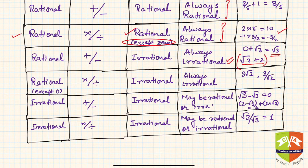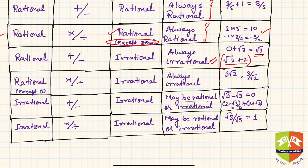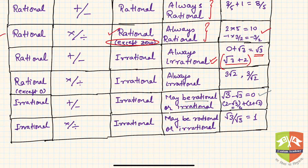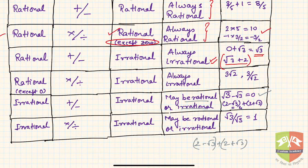Most interestingly, irrational plus or minus irrational is not necessarily rational — it may be rational or it may be irrational. For example, √3 − √3 = 0, which is rational. Also, (2 − √3) + (2 + √3) are two irrational numbers; if you sum them you get 4, which is rational.